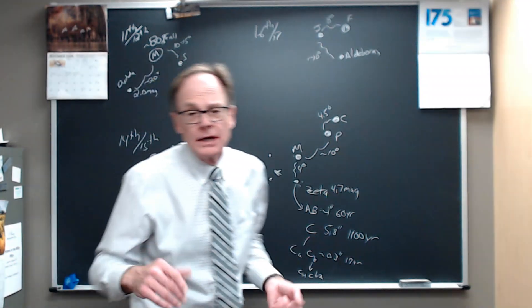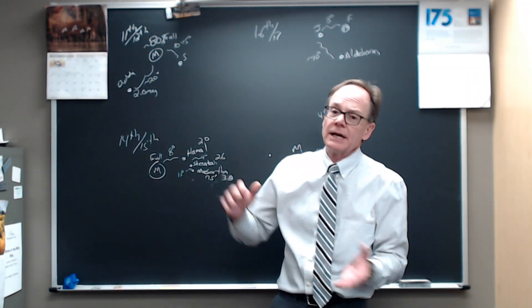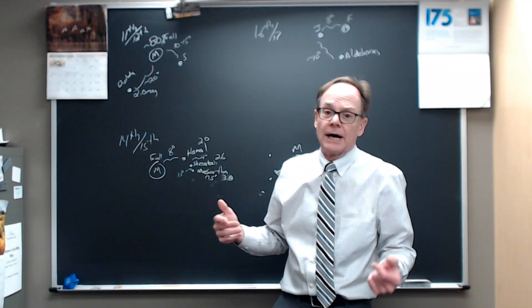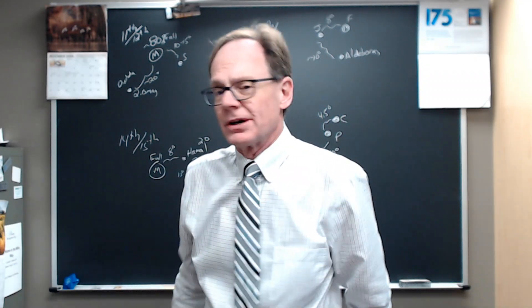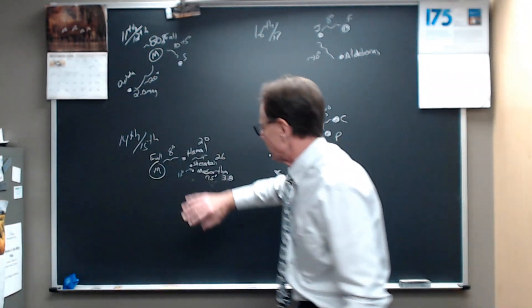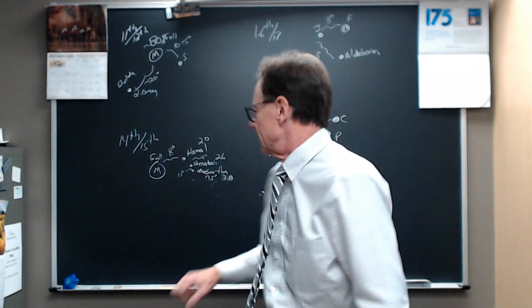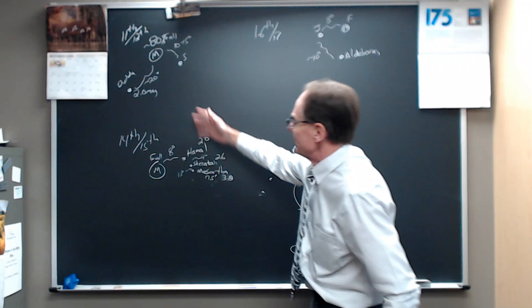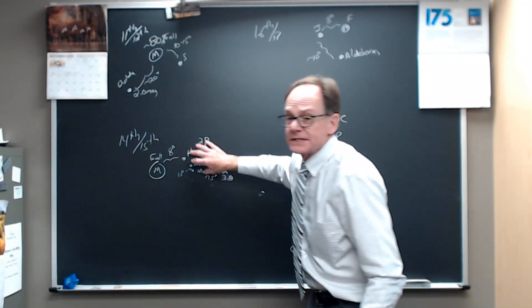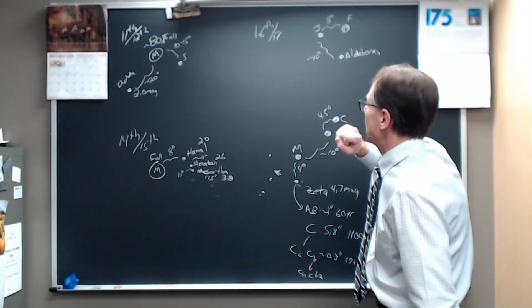Interesting to note, you've got gamma Leonis and you've got gamma Andromeda. And so you've got these gamma stars, for whatever reason, that are not too far away from here, that are all really nice binary stars. And this is another one in Aries. And again, if you haven't found Aries before, you haven't seen Cetus, you haven't seen Aries, great opportunity to use the moon to guide you to do that.